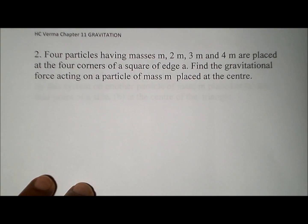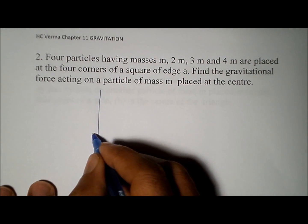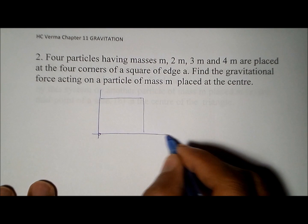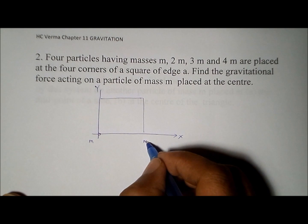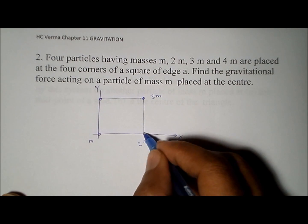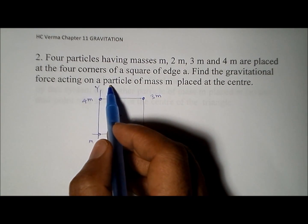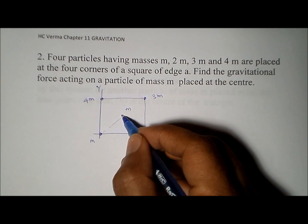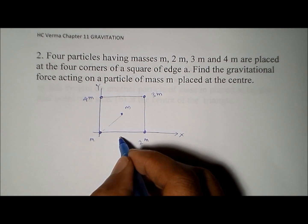This is the second problem from chapter 11 of SC Verma on gravitation. We have four particles placed on the four corners of a square. We set up an x-axis and y-axis and place particles of masses m, 2m, 3m, and 4m on the four corners. We need to find the gravitational field on a particle of mass m placed at the center. The square has a side length of a.